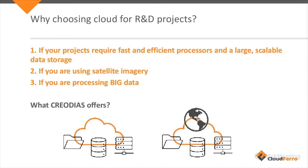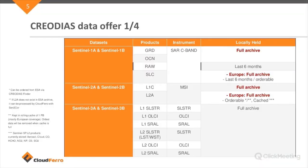What does Criodias offer? At one point, we offer cloud with data storage, data catalog, and processing environment. On the other hand, you can also use the cloud with a data repository. So depending on your project and what you intend to do, when we are talking about data collection, we should emphasize that the data collection available on Criodias is a great collection, because first of all, we have the Copernicus data.